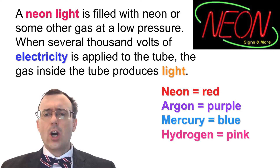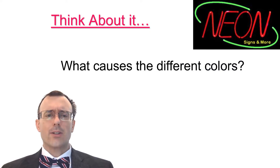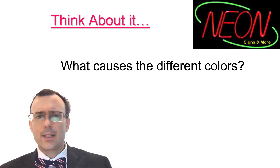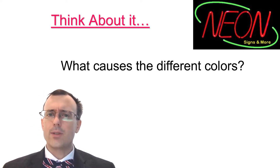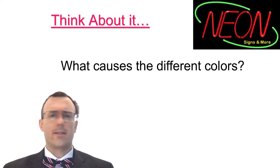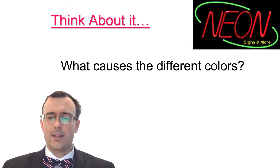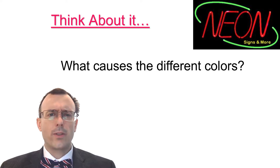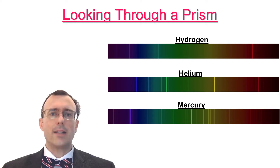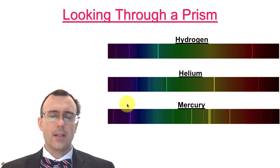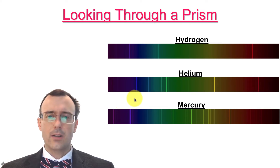What is actually causing the different colors? They're coming from the different gases — but why would a different gas produce different colors? This puzzled scientists for a while, so they did what scientists do: they tried to analyze it as much as possible. They decided to look through a prism, and when they did, they saw lines of light. Looking through a prism or a diffraction grating, you'll find lines of different colors of light.